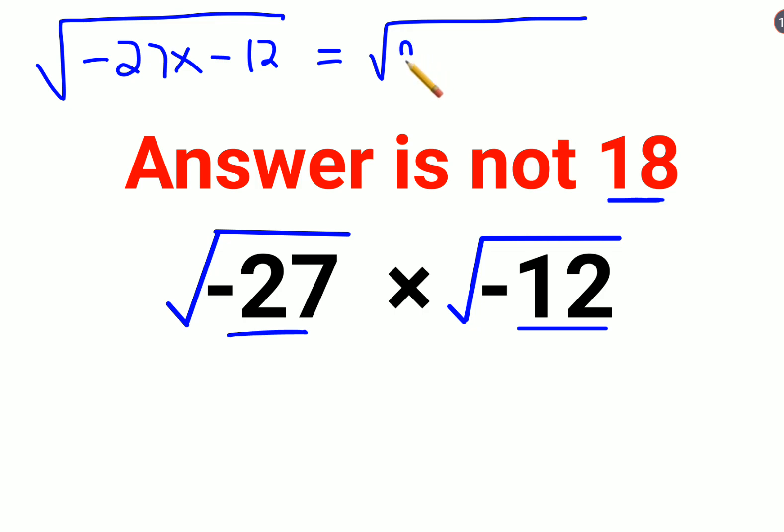And 27 can be written as 9 into 3. Similarly, 12 can be written as 4 into 3.